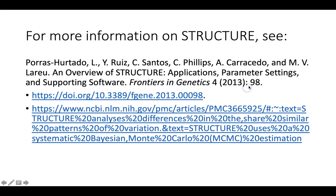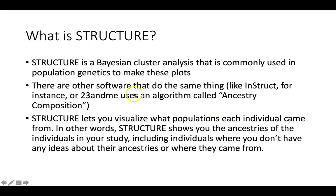For instance, there's a program called Instruct, and another one that 23andMe uses called Ancestry Composition. The idea is that Structure and these other programs let you visualize what populations each individual came from — whether that individual is a human or from some other species. The software takes DNA from your specimens, groups individuals by similarities in their DNA, and discovers when individuals are hybrids from different ancestors inferred based upon the DNA.